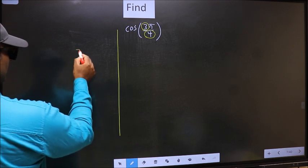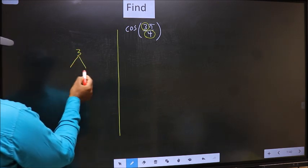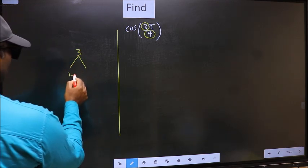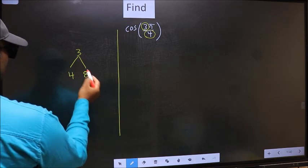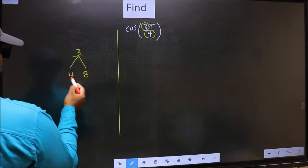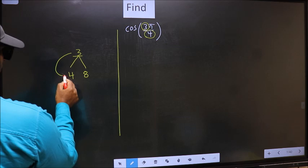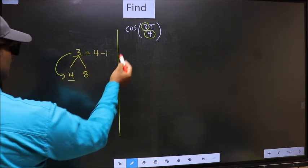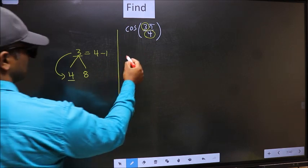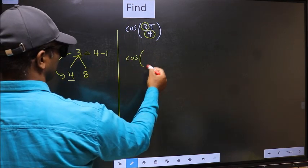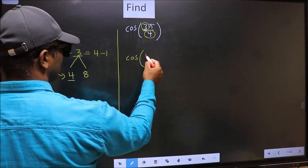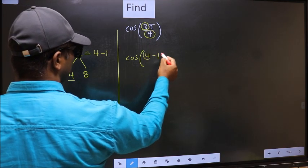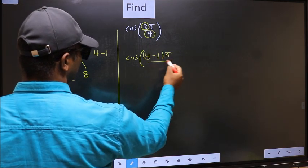What I mean is 3 and here you write multiples of 4, that is 4 and 8. Now 3 is close to which number? This is close to 4. So 3 should be written as 4 minus 1. So this will become cos, in place of 3, now you should write 4 minus 1, π/4.